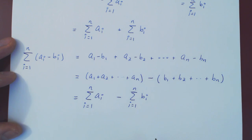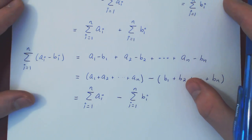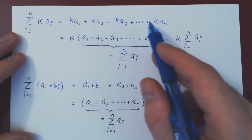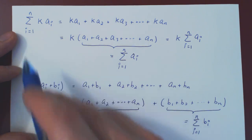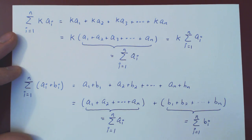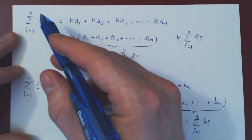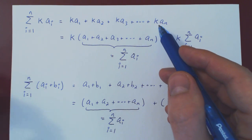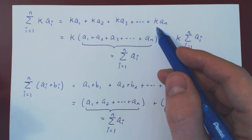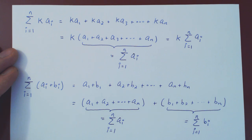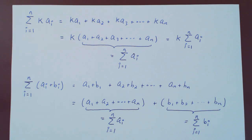So there you have it. Now that we have sigma notation — how to write sums in very compact and concise ways — the next question is: do we sometimes have shortcuts, or do we always have to evaluate summations by adding every single term? Are there special sums with shortcut formulas? The answer is yes, and we'll consider those summations in our next video.